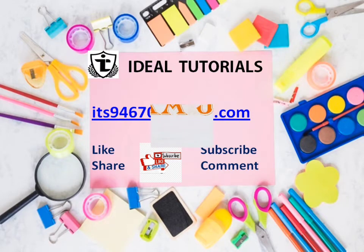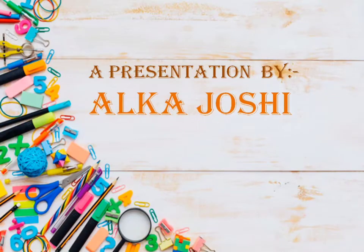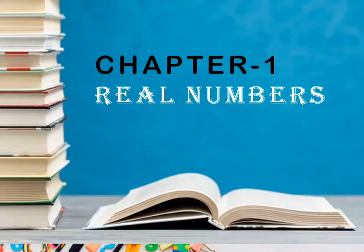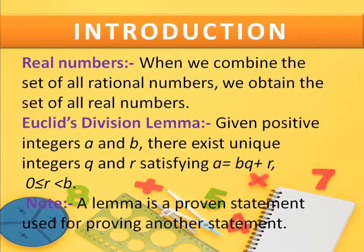Today we are going to do the first chapter, that is the real numbers. Now what are the real numbers? It is a set of all the rational numbers. So we are doing the Euclid's Lemma first of all: A is equal to BQ plus R.